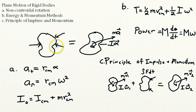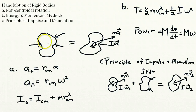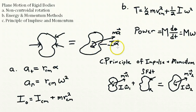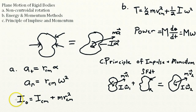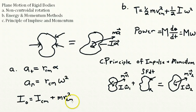The plane motion of rigid bodies means two-dimensional motion of a non-point, rigid body that can rotate. The sum of all forces and moments can be written as mass times acceleration and moment of inertia times angular acceleration. For non-centroidal rotation, the tangential and normal acceleration components follow the same form, and the parallel axis theorem states the moment of inertia about a non-center-of-mass point equals I_cm plus m times the distance squared.